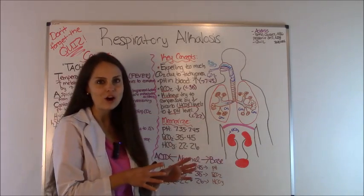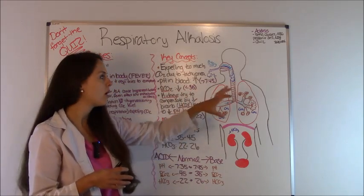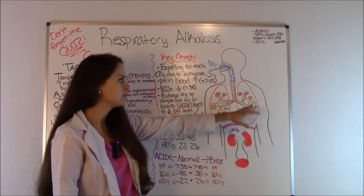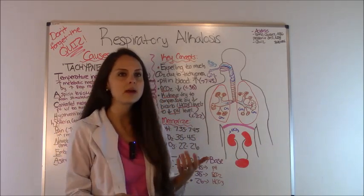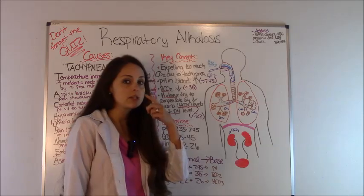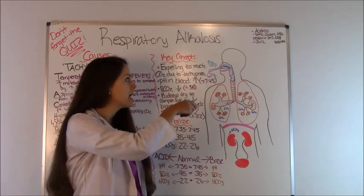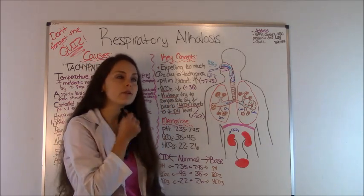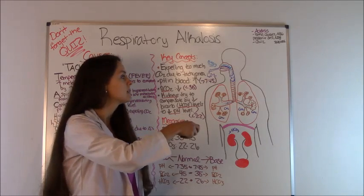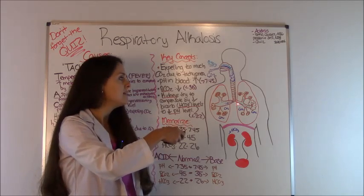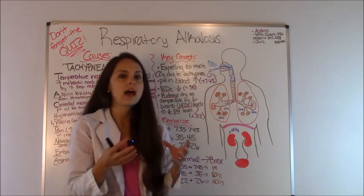First let's look at the pathophysiology and simplify it. Whenever you have respiratory alkalosis the problem is in the lungs, specifically in the alveolar sacs. When you breathe in air, you take oxygen in through your nose or mouth and it travels down to your pharynx, then through your larynx, then down through the trachea which branches off into the right and left bronchus, then into your bronchioles, and then into your alveolar sacs.